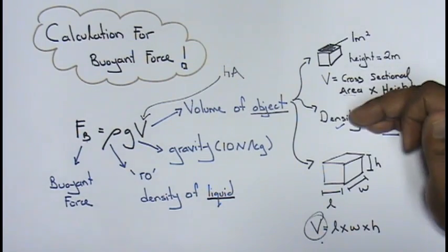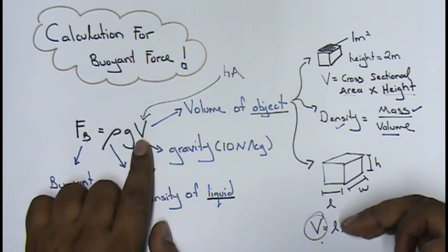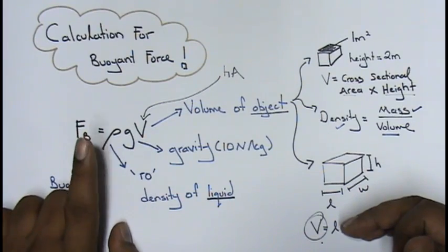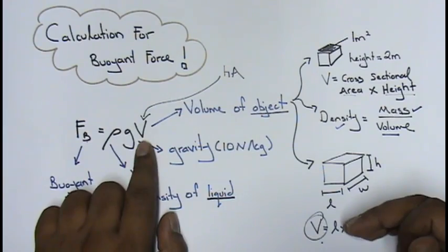So these are the three ways how they can over here test you for volume. Because most of the times your rho and your gravity is just easily you can substitute inside. Only your V over here is a challenge.